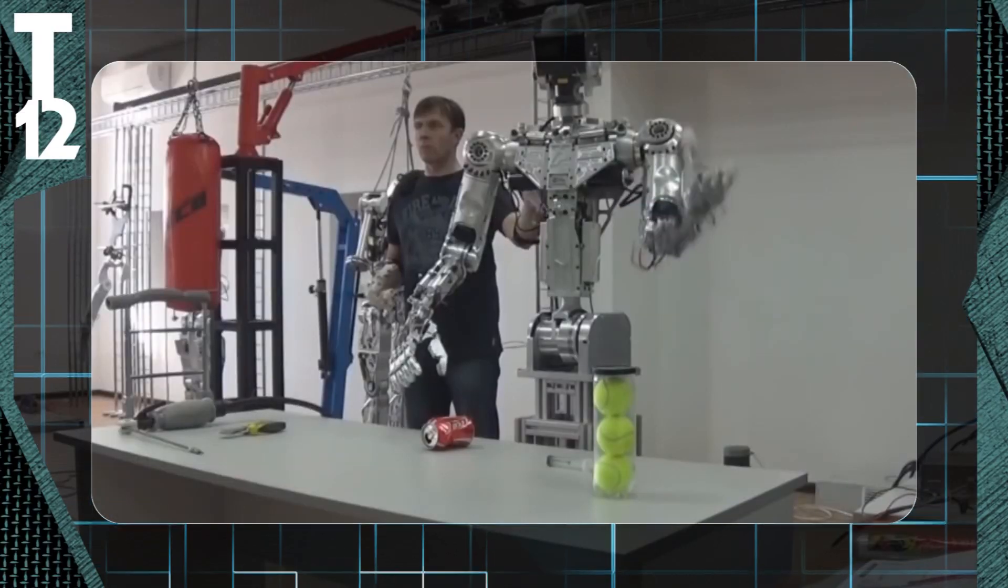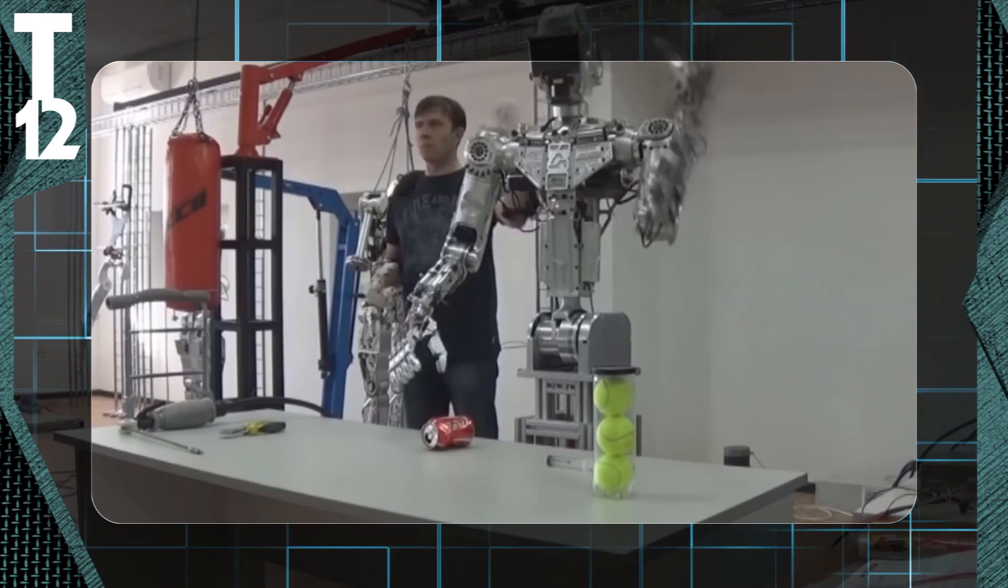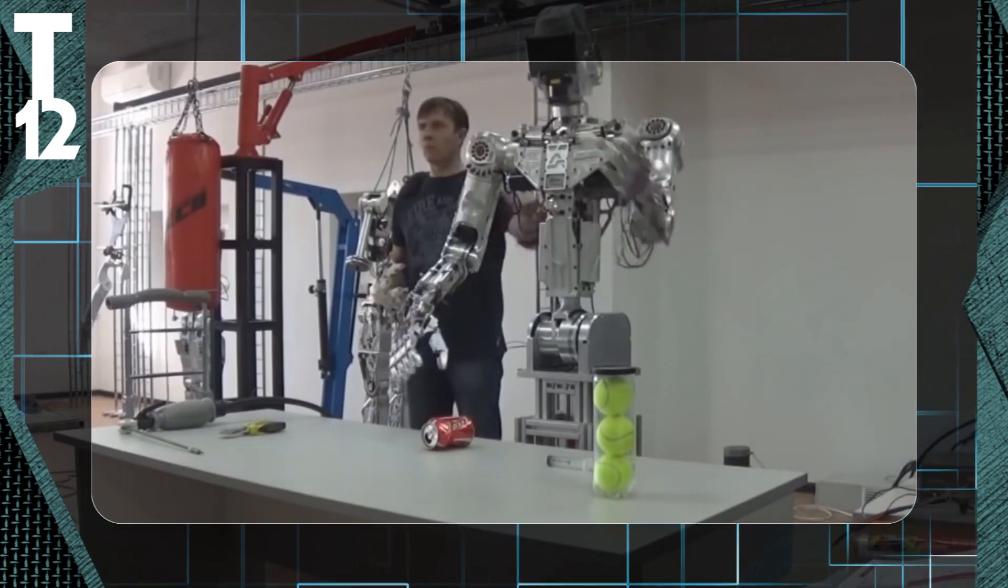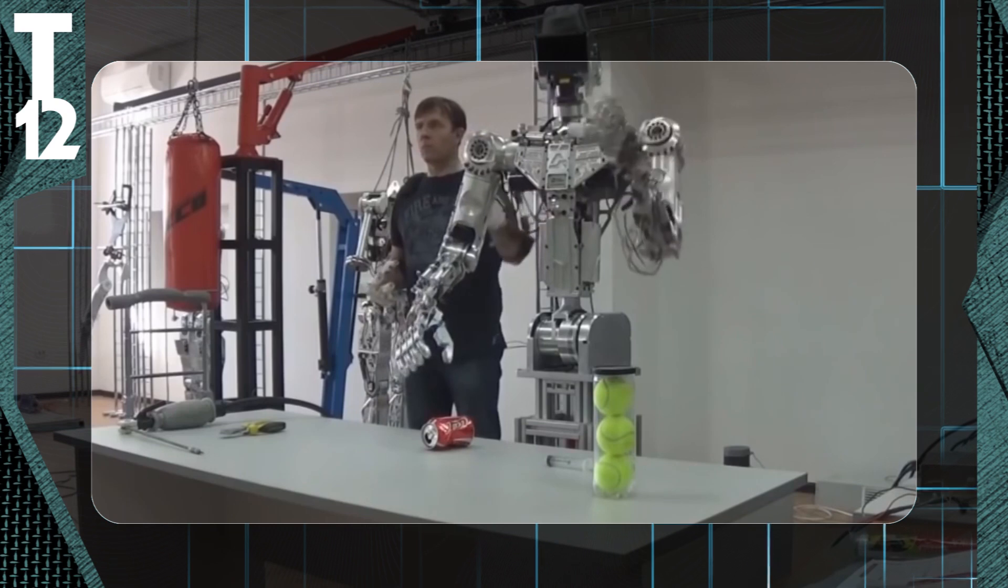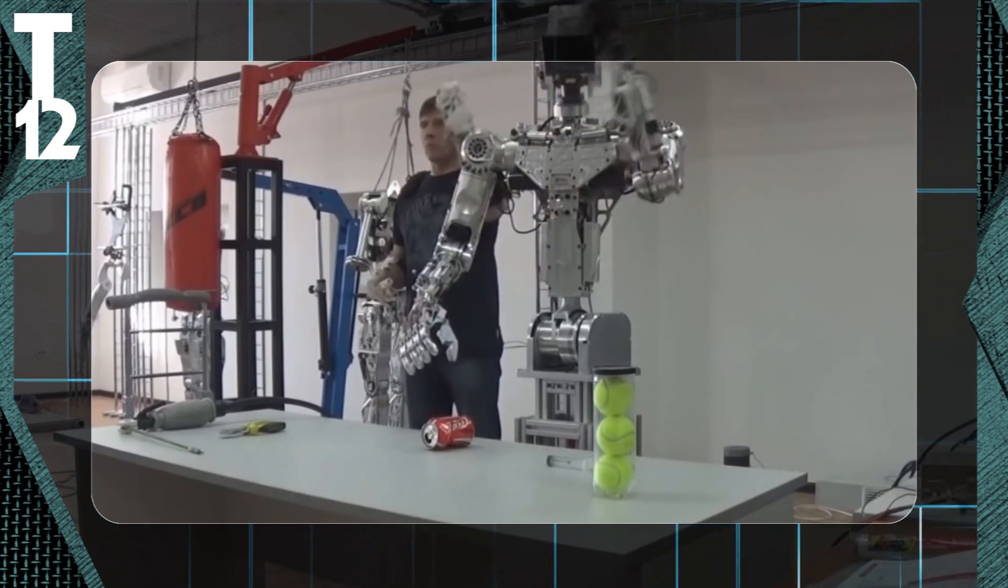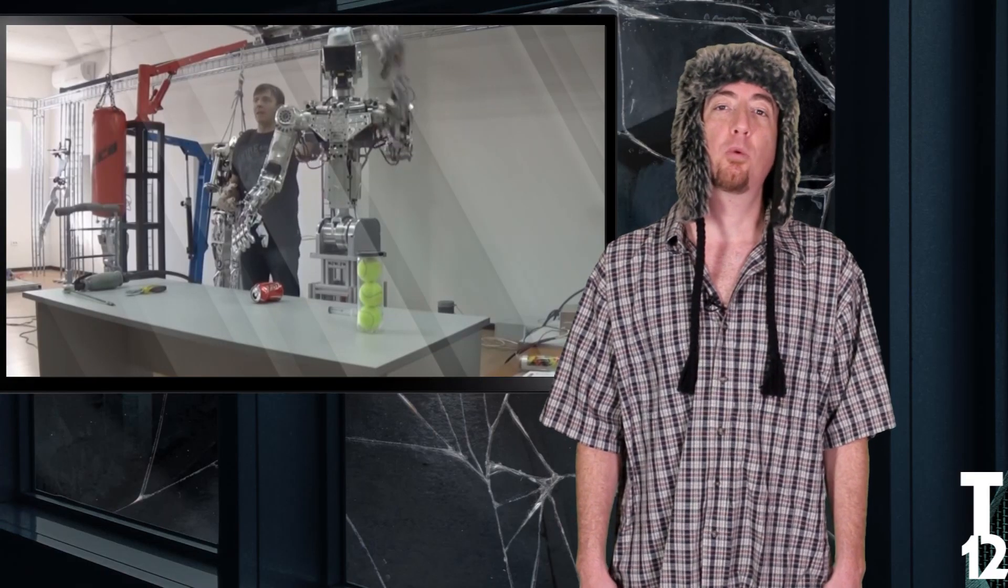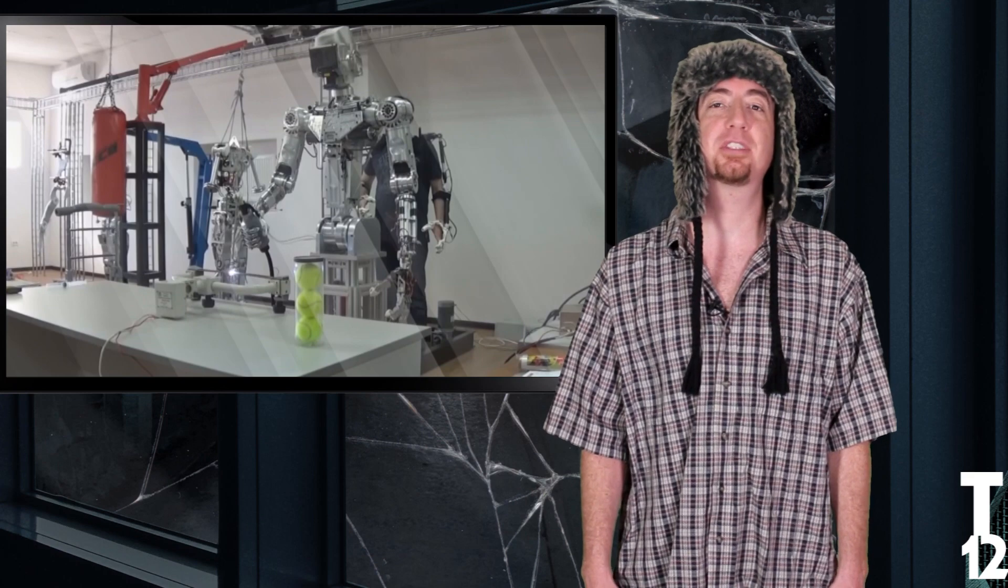Deputy Prime Minister Dmitri Rogozin told reporters that space applications will be first priority for military robots. He goes on to explain, we've launched work to create an avatar that will become a crew member of the Russian National Orbital Station.